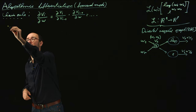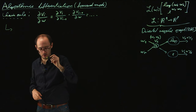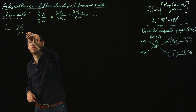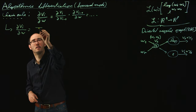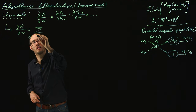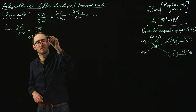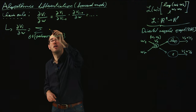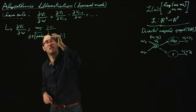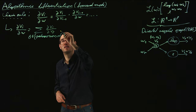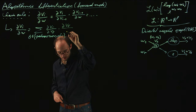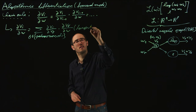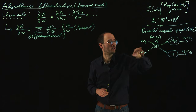Based on this chain rule in the forward mode, we can derive a graphical rule which states that the partial derivative of V_i with respect to W is identical to the sum over J being the predecessors of i of the partial derivative of V_i divided by V_J, times the partial derivative of V_J with respect to W. This is called the forward mode tangent.